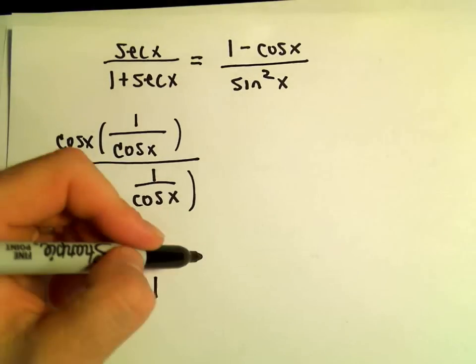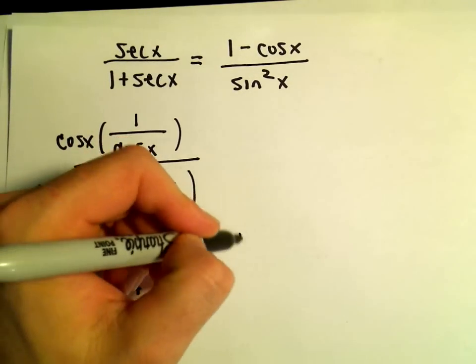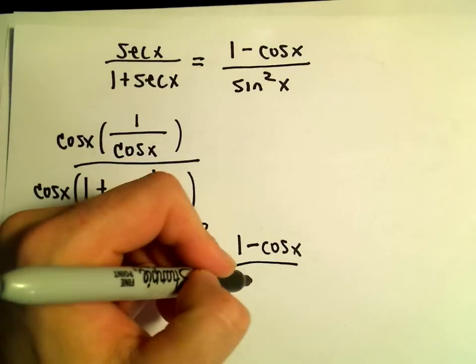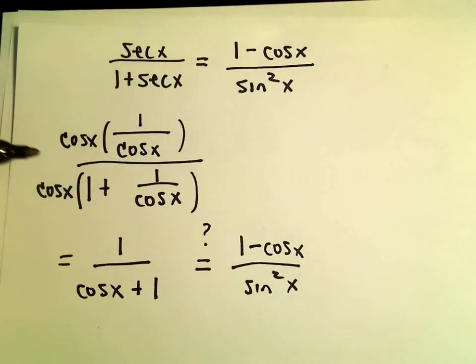So I'm thinking, is there any way that equals 1 - cos(x)? Well, it's not readily apparent just yet.